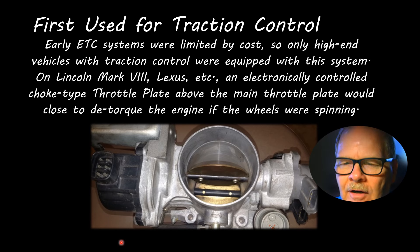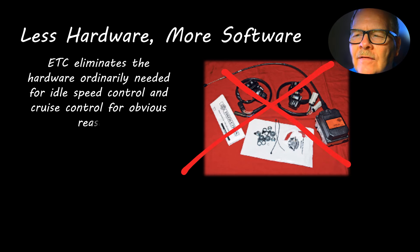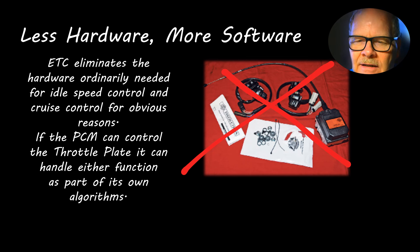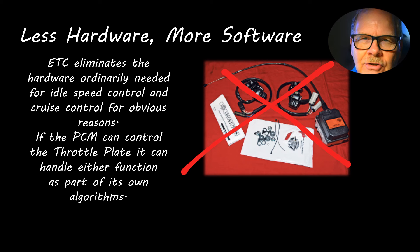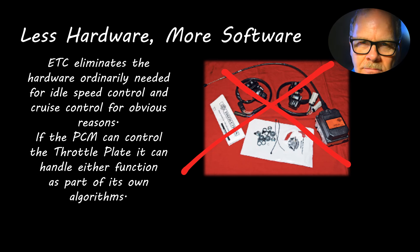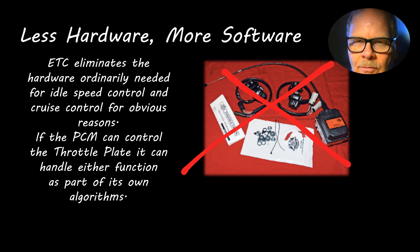With electronic throttle control you don't need an idle air control motor, idle speed control motor, or any hardware for cruise control. When I bought my 2007 F-150 at two years old with 68,000 miles on it, I wanted cruise control. I went to the Ford dealership parts department and asked if there was a cruise control kit listed for it — they said no. So I bought the set of cruise control buttons, pulled the airbag off the steering wheel, put the buttons on — the wiring was already there — and all I had to do was plug those buttons in.